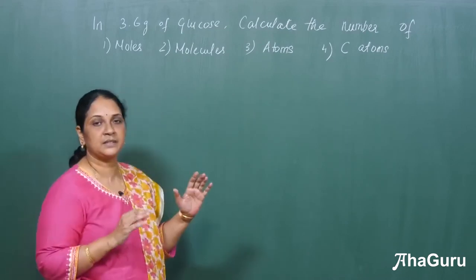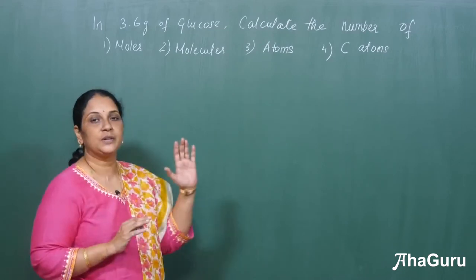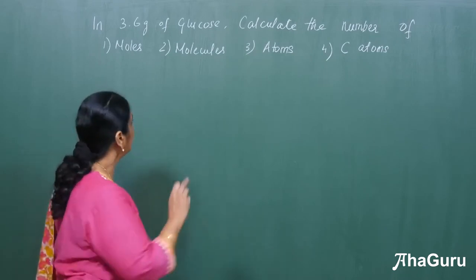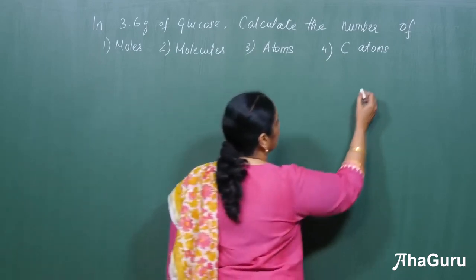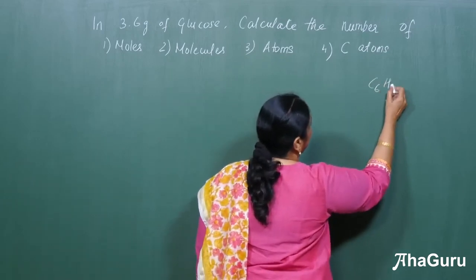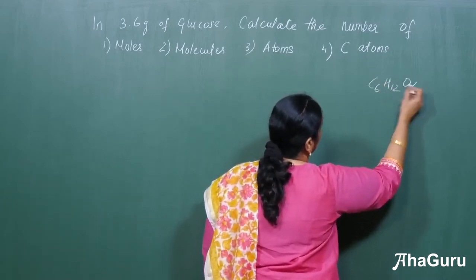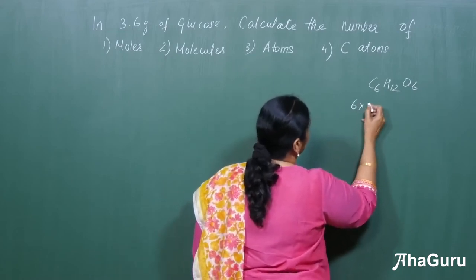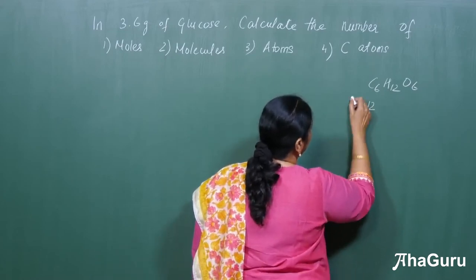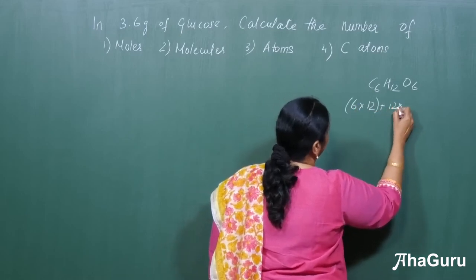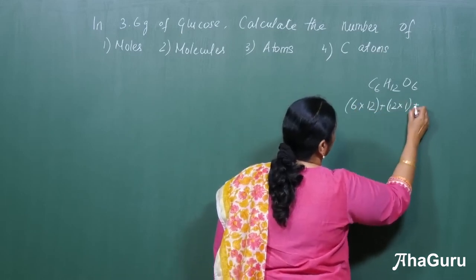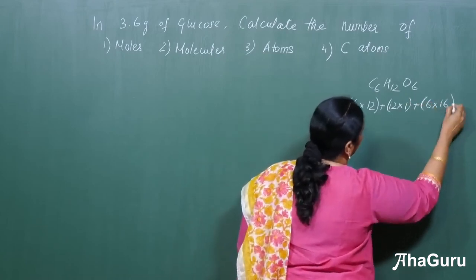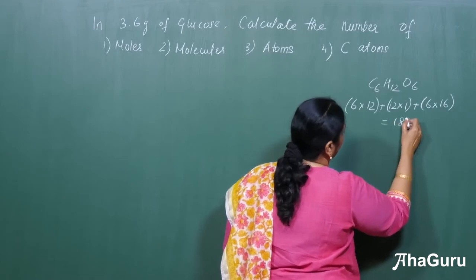So once you know this, the compound is glucose, so let us calculate the molecular weight of that compound. Glucose is nothing but C6H12O6. The molecular weight is: 6 carbon atoms × 12 plus 12 hydrogen atoms × 1 plus 6 oxygen atoms × 16, which equals 180 grams.